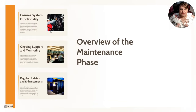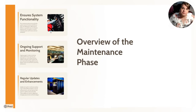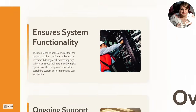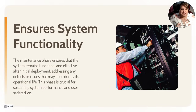The overview of the maintenance phase — it ensures system functionality, making sure that your system still works; ongoing support and monitoring so you help people use it and check that it's working correctly; and it provides regular updates and enhancements. The maintenance phase ensures that the system remains functional and effective after initial deployment, addressing any defects or issues that may arise during its operational life. This phase is crucial for sustaining system performance and user satisfaction.